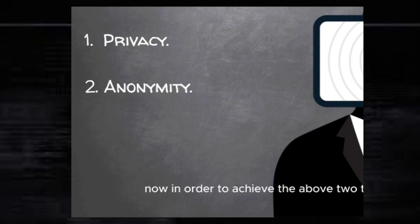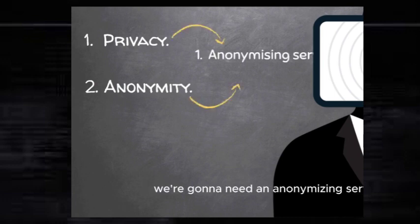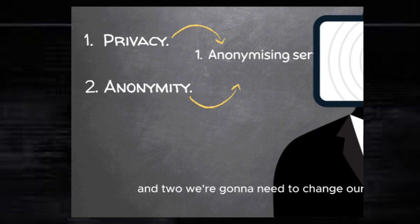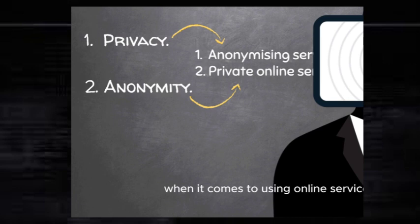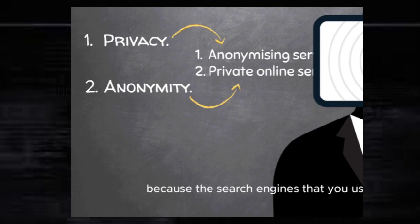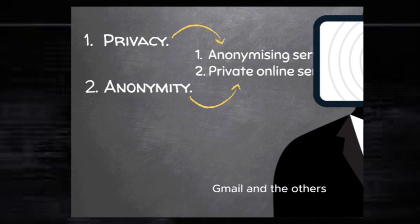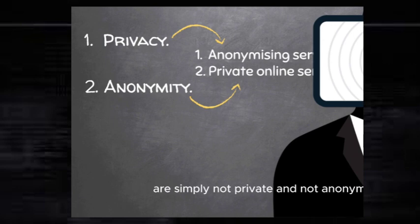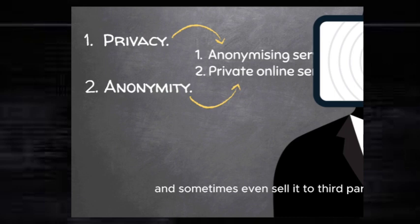In order to achieve the above two things — to become more private and more anonymous — we're going to need two things. First, we're going to need an anonymizing service that will allow us to become more anonymous. Second, we're going to need to change our habits when it comes to using online services, and use different services that are more private and more anonymous. Because the search engines you're used to — Google and Bing — the emails you're used to — Gmail and others — and all the other services you're used to are simply not private and not anonymous. They profile you, collect data about you, and sometimes even sell it to third parties.